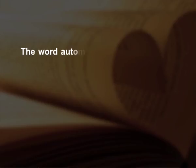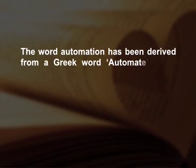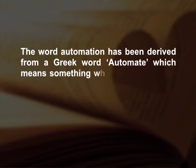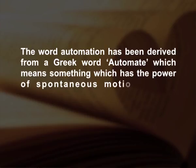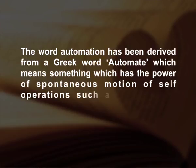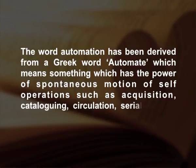This covers usually housekeeping operations such as acquisition, serial control, cataloging, circulation and administration work. The word automation has been derived from a Greek word 'automate' which means something which has the power of spontaneous motion or self-operation, such as acquisition, cataloging, circulation, serial control, etc.